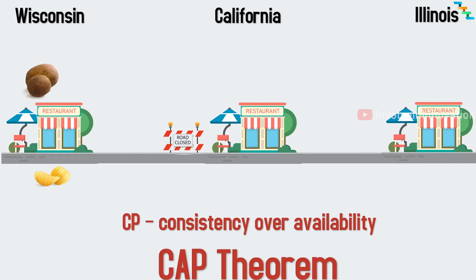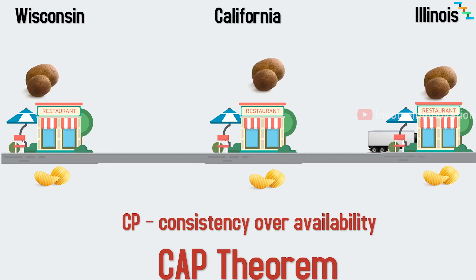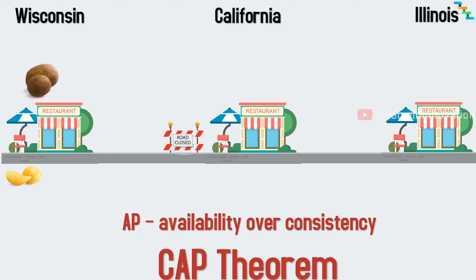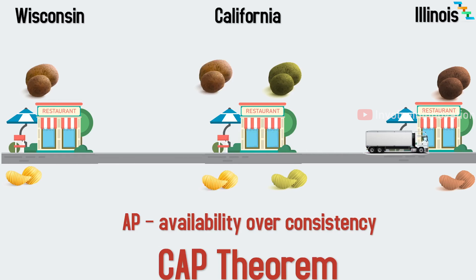This makes the restaurants other than Wisconsin unavailable — so here we are prioritizing consistency over availability. Once the issues are mitigated, I can get supplies delivered to California and Illinois and start chip production in all restaurants. If I try to prioritize availability over consistency, I can use locally grown potatoes until I get the Wisconsin-grown potatoes. There will be inconsistency for some time until the Wisconsin-grown potatoes arrive, and once they arrive, we get the consistency back. This is eventual consistency — the system will be inconsistent for a certain time, and once the inconsistency is resolved, all nodes become consistent.